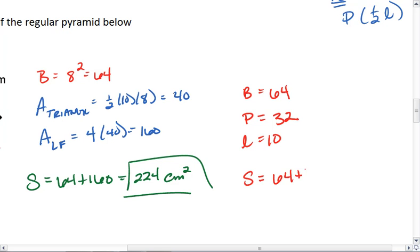I can plug this into my equation. I get 64 plus 1/2 times the perimeter times the slant height. This gives me 64 plus 160, which gives me 224 centimeters squared.